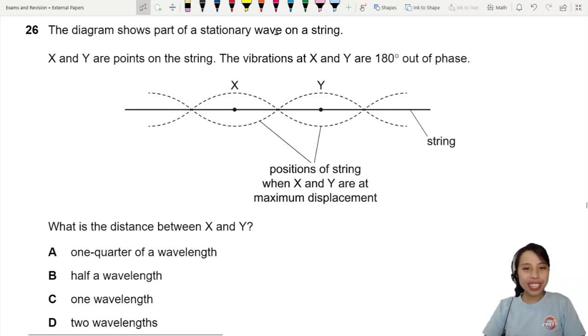The diagram shows part of a stationary wave on a string. X and Y are points on the string. Vibrations at X and Y are 180 degrees out of phase. What's the distance between X and Y? This one is a fact.